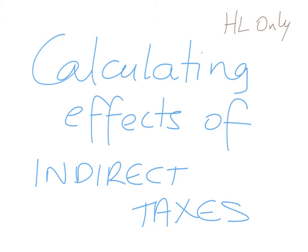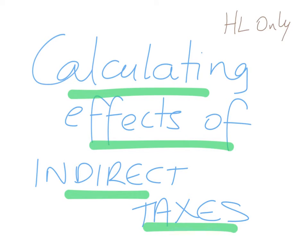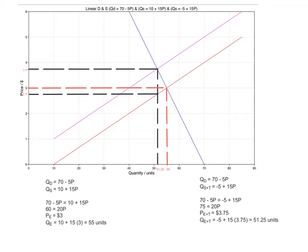Just after covering tax incidence, we're going to look at calculating the effects of indirect taxes — this is for higher level only in the IBDP economics syllabus. Here's a situation in a market for a product where there has been an indirect tax. This is the demand curve, this is the supply curve before tax, and S1 is the supply curve after tax. An indirect tax increases the costs of production, and therefore the supply curve will shift to the left.